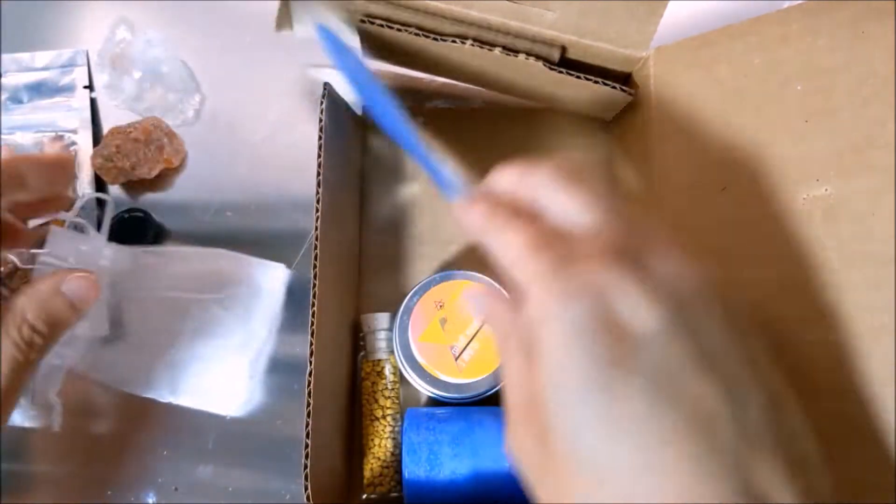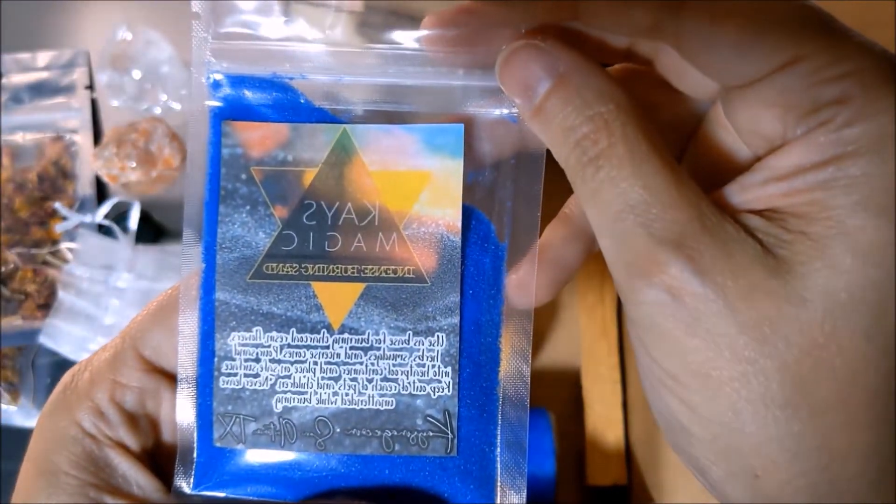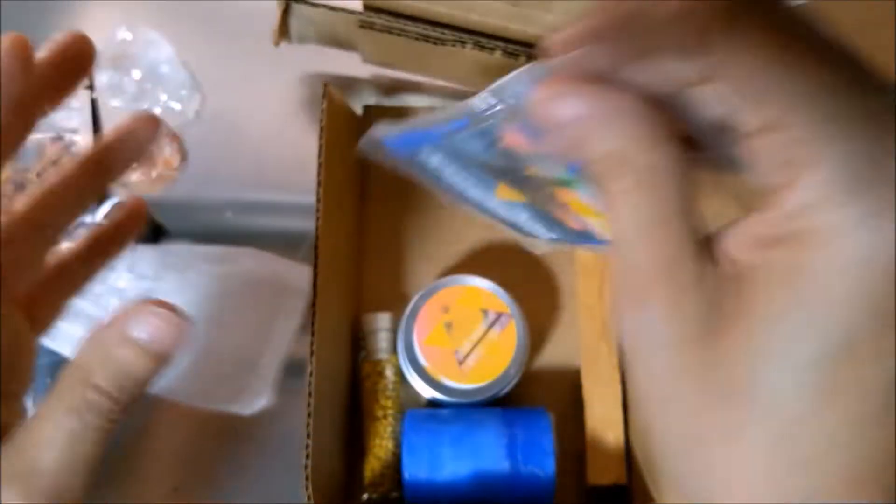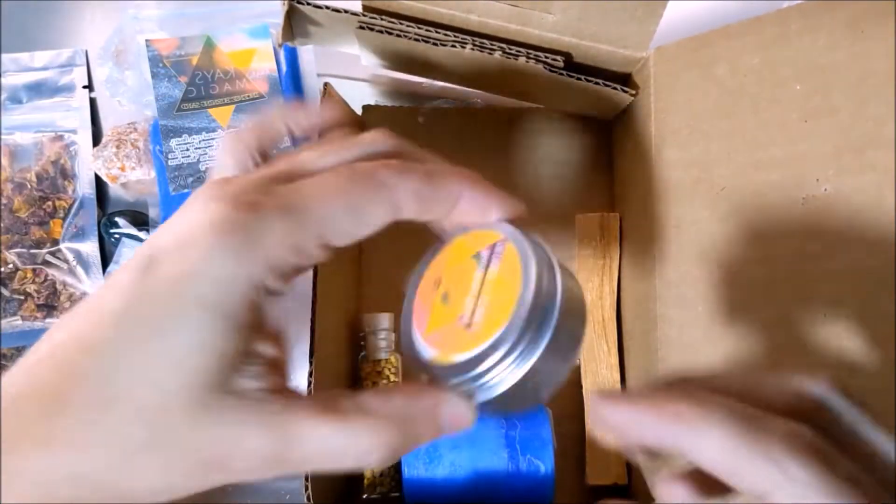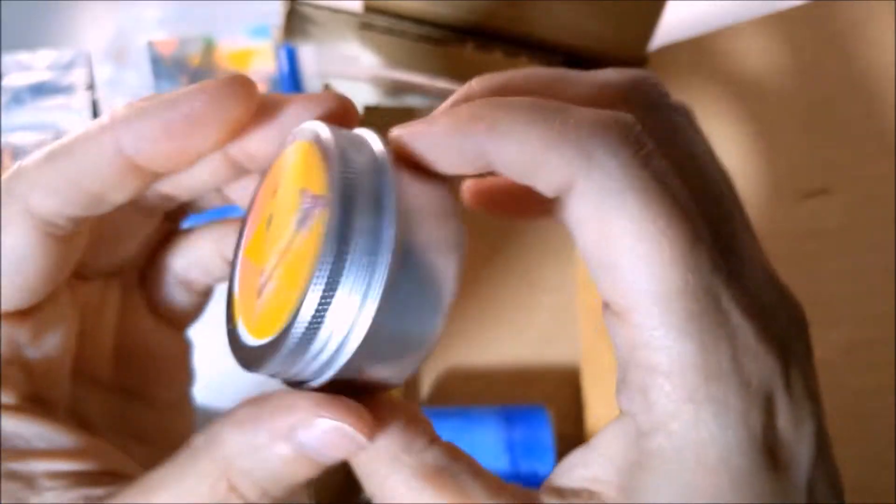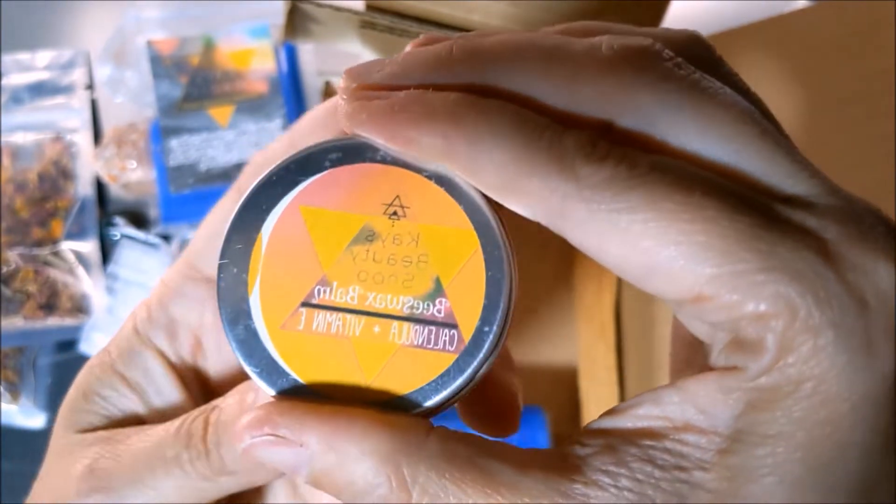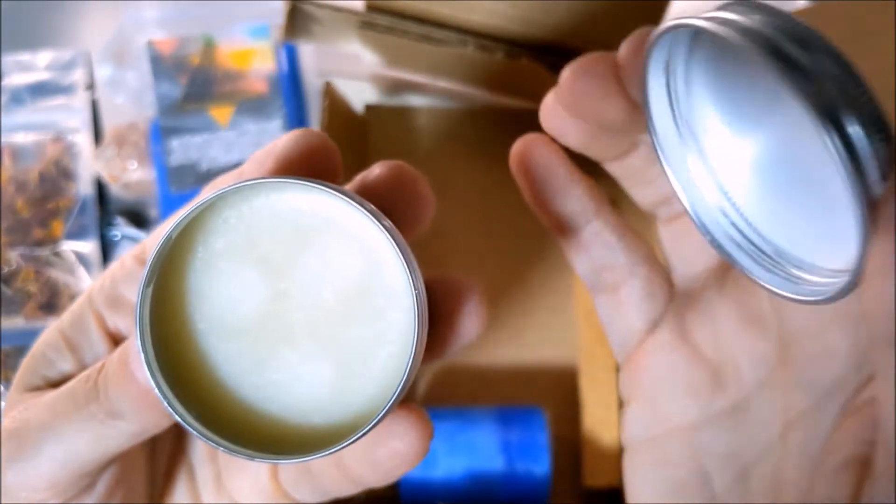This is sand that's going to be underneath something you're burning as sort of insulation so you don't burn your table. This is some beeswax balm with calendula. It's got coconut oil and beeswax with calendula and vitamin E. It looks good. Nobody's been sticking their fingers in it or anything.